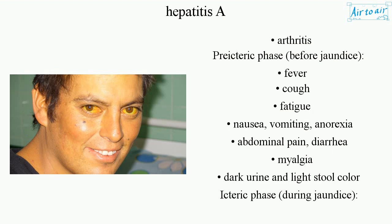The pre-icteric phase occurs before jaundice and includes symptoms such as fever, cough, fatigue, nausea, vomiting, anorexia, abdominal pain, diarrhea, myalgia, dark urine, and light stool color.